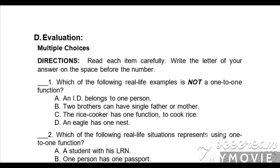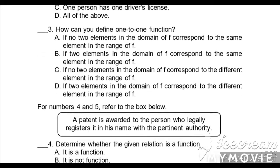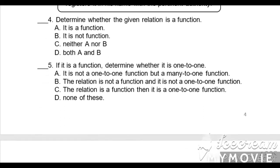For the guided practice activity, give three examples of situations that can be represented as a one-to-one function and two examples that are not one-to-one — numbers 1 to 3 for one-to-one, and 4 and 5 for not one-to-one. Then for the evaluation, multiple choice: read each item carefully, write the letter of your answer on the space before the number, or use an extra sheet of paper. Answer items 1 through 5.